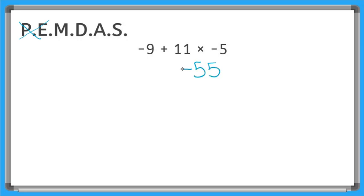Now I'm going to bring down the negative 9 that I have over here and the addition sign. Now this is all I have left is addition. Negative 9 plus a negative 55 is equal to negative 64. This is our final answer.